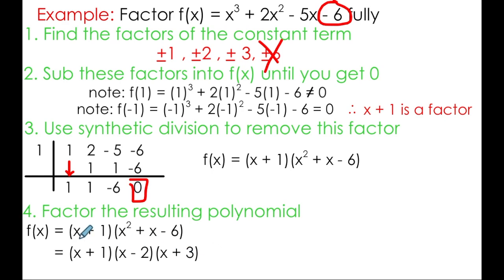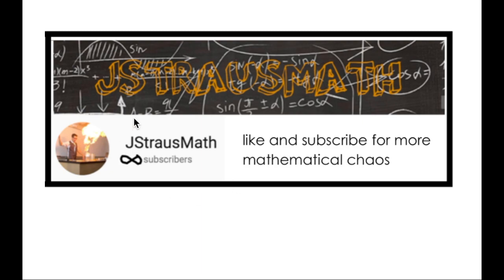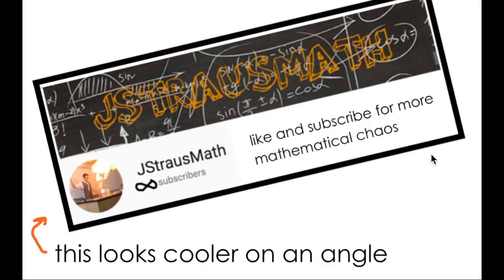Now, if you wanted to check your answer, you could multiply these three binomials by each other and check that you do, in fact, get the original cubic back. This is fully factored form as opposed to this form, which would really just be considered partially factored. So that's how you can use the factor theorem to factor cubics. If this video helped in any way, feel free to like and subscribe for more mathematical chaos. And as usual, thanks for watching.